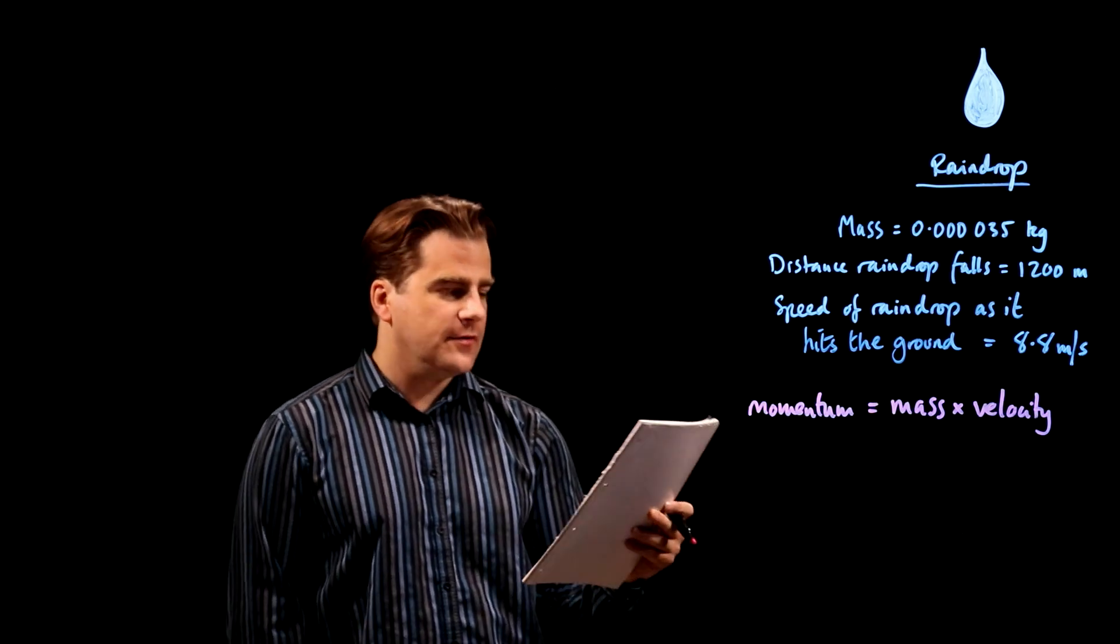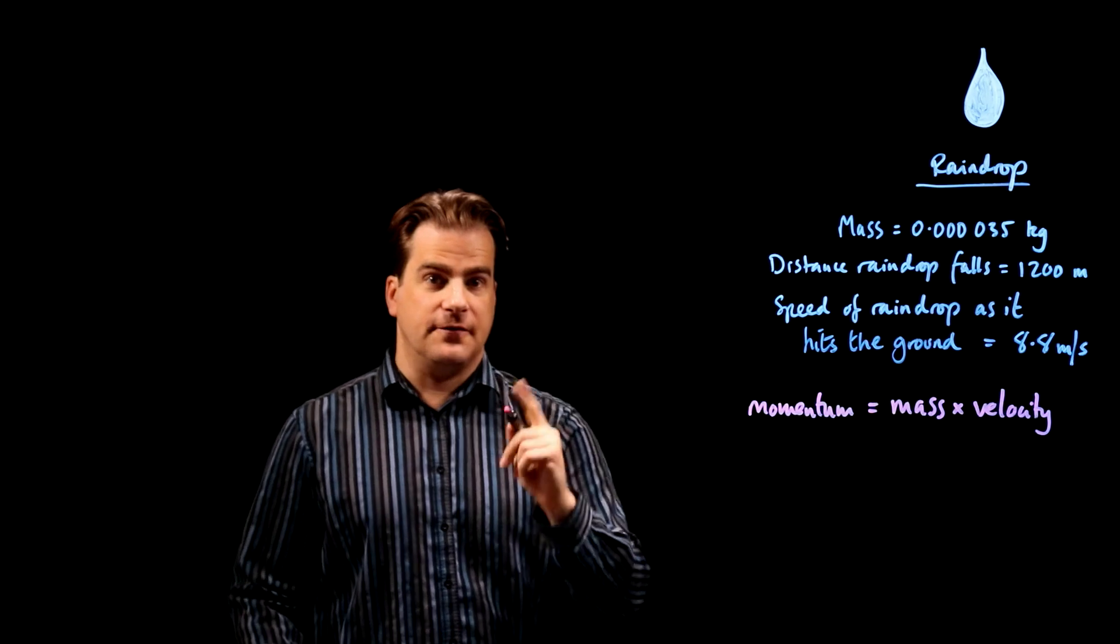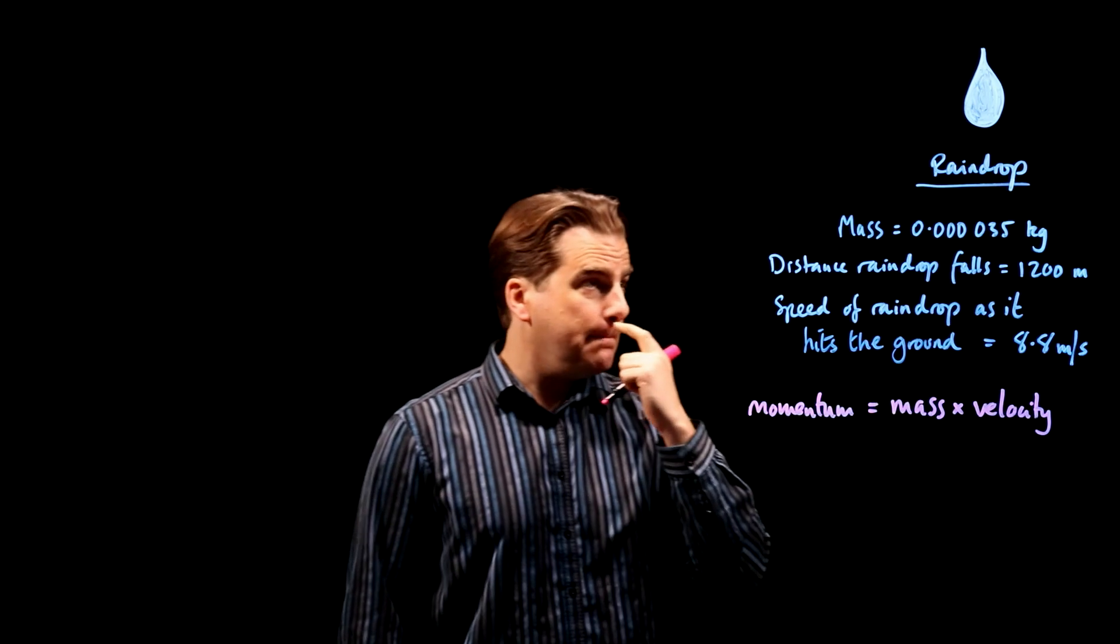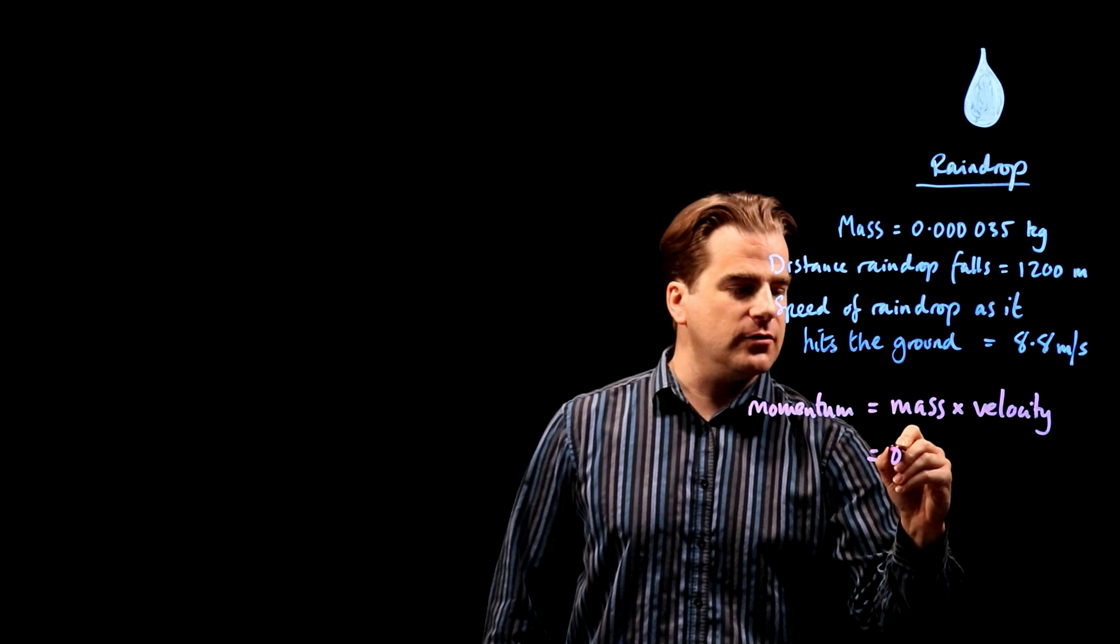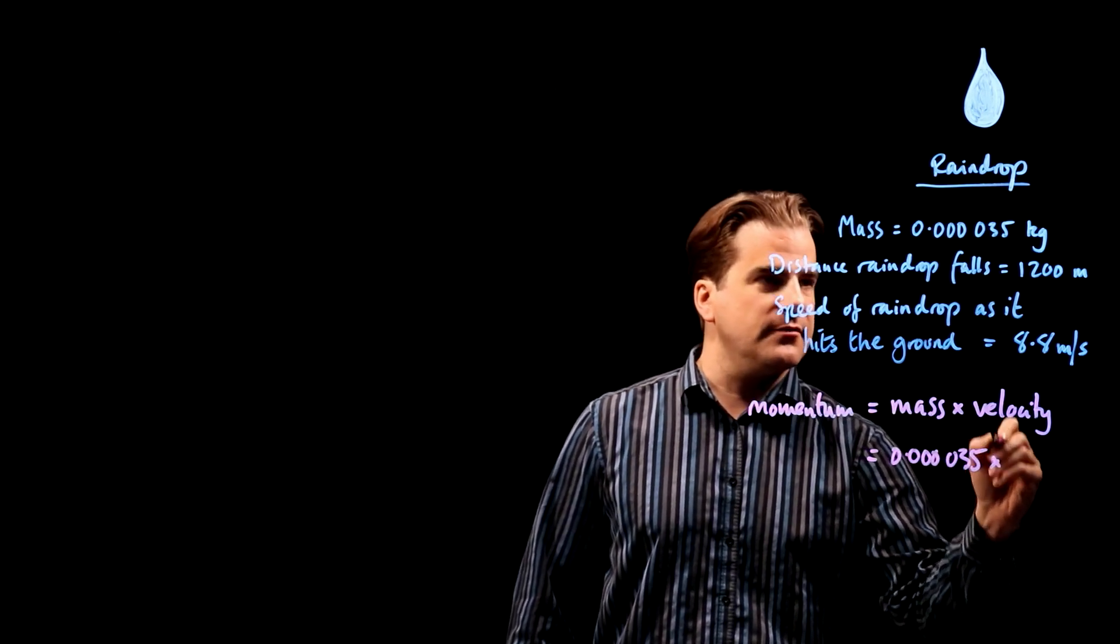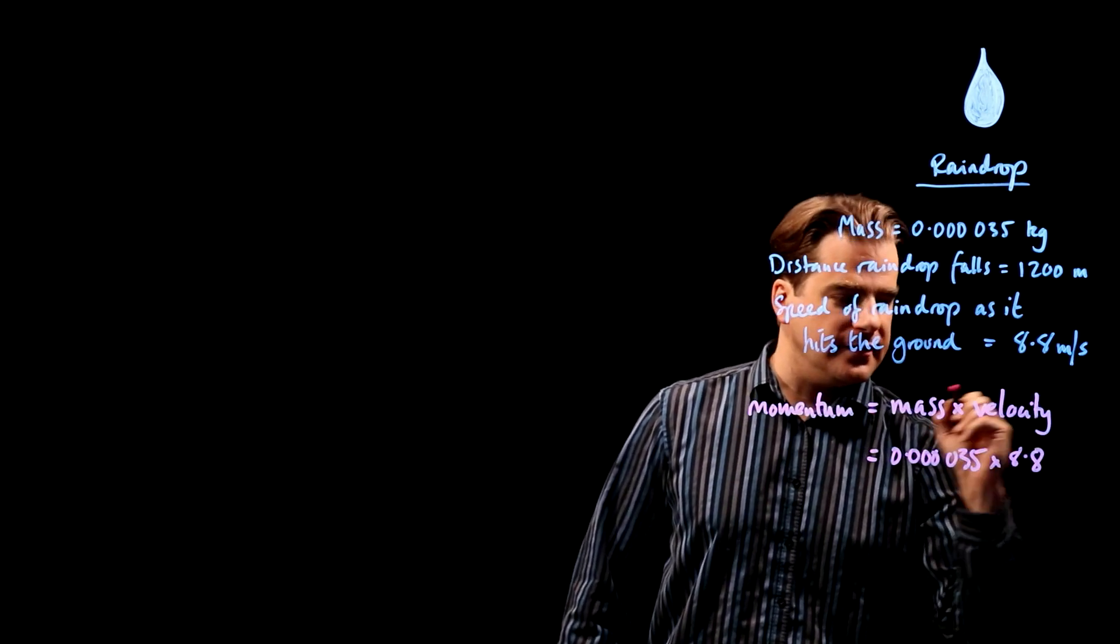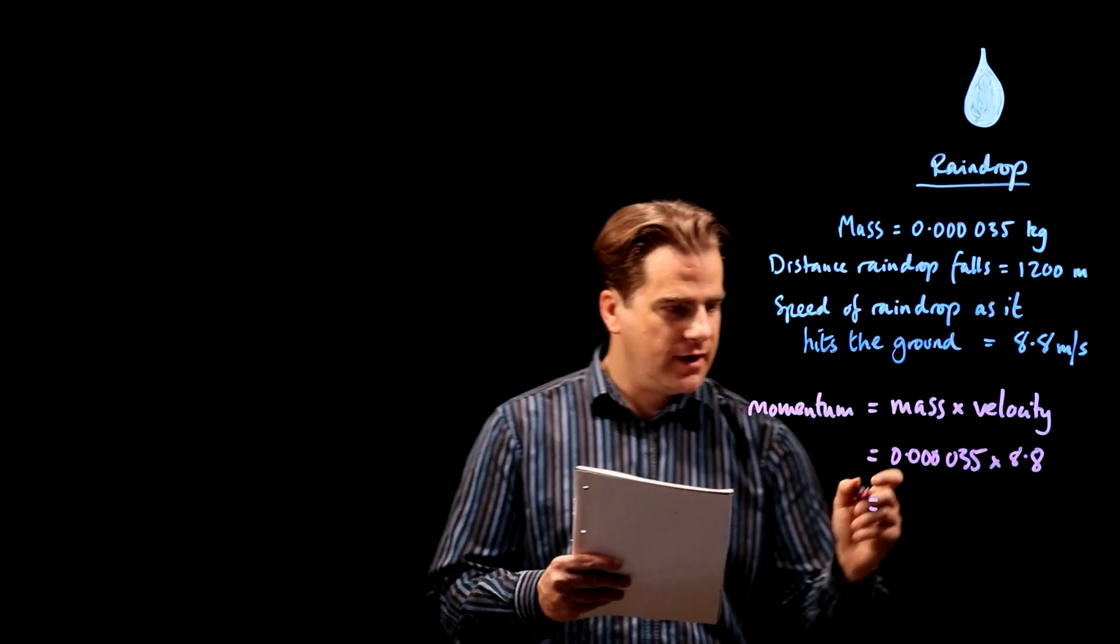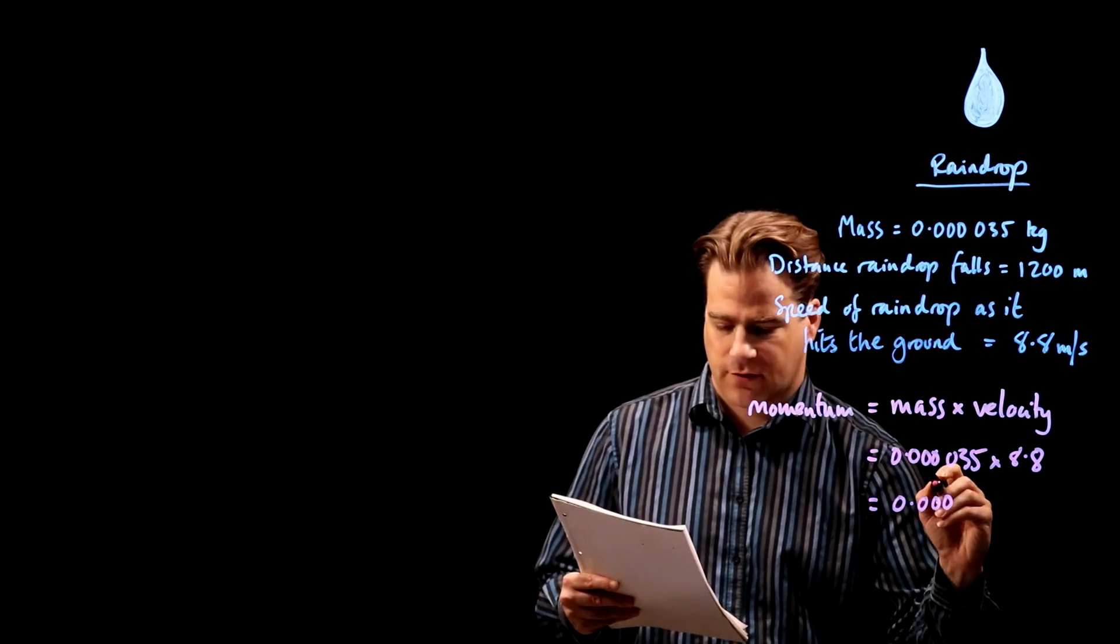Calculate the momentum of the raindrop as it hits the ground, three marks, give the unit. Okay, so using this equation, that is equal to the mass is 0.00035 kilograms times the velocity, speed of the raindrop as it hits the ground is 8.8. Okay, stick that in your calculator,